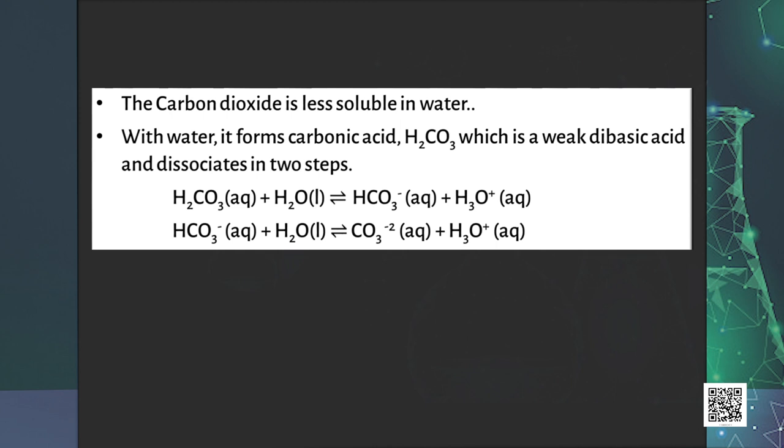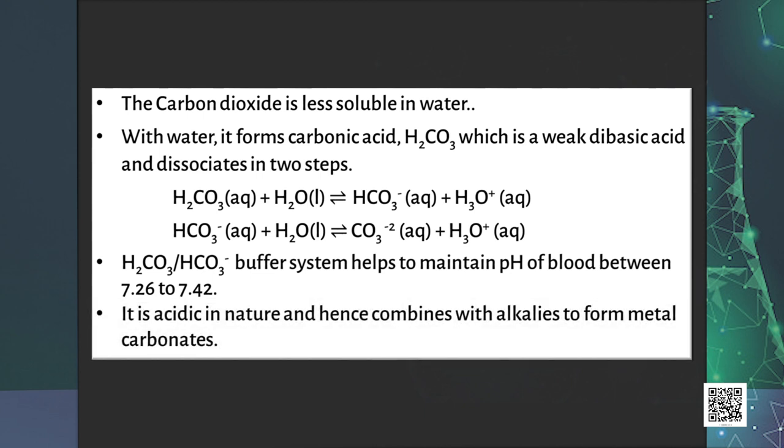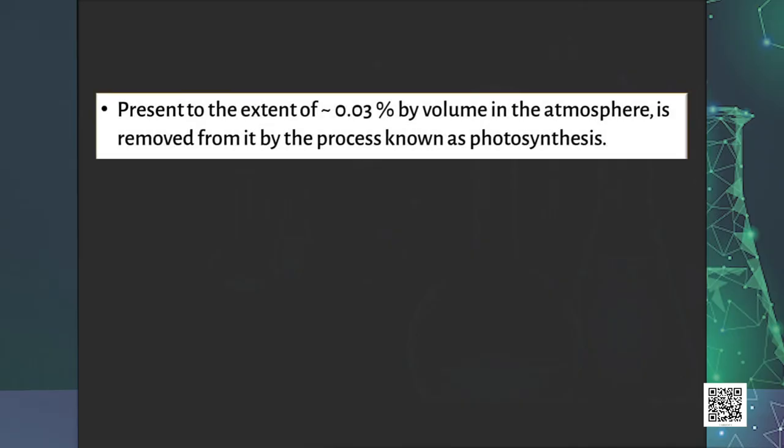With water it forms carbonic acid, that is H2CO3, which is a weak dibasic acid and dissociates in two steps. H2CO3 / HCO3- buffer system helps to maintain pH of blood between 7.26 to 7.42. Being acidic in nature, it combines with alkalis to form metal carbonates.